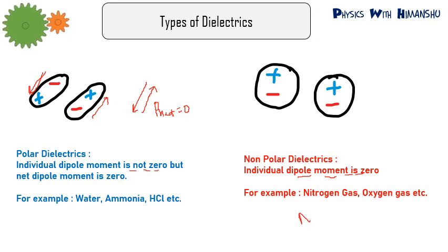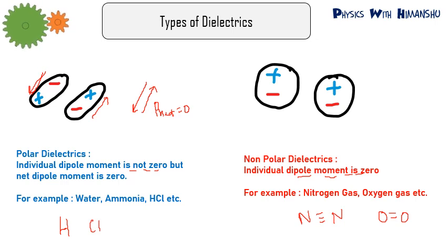For example, nitrogen gas (N≡N) — both atoms have the same electronegativity, so the net dipole moment is zero. Same for oxygen gas. But if you take HCl, hydrogen and chlorine have different electronegativities, so there will be a net dipole moment. This is how we classify polar and non-polar dielectrics: in polar dielectrics the individual dipole moment is not zero, while in non-polar dielectrics it is zero.